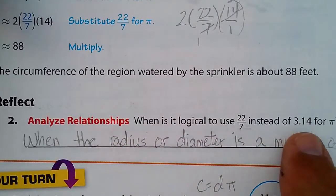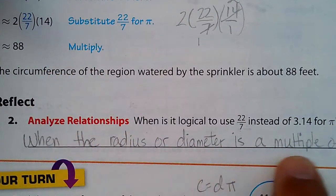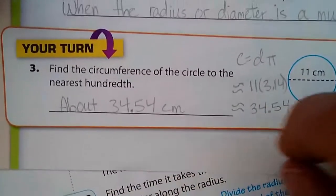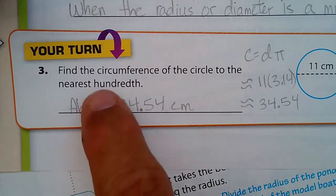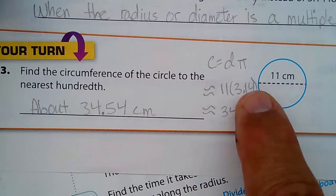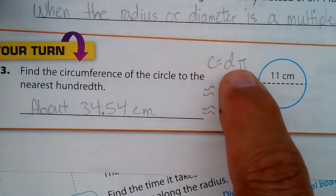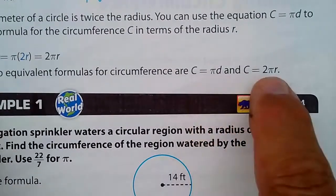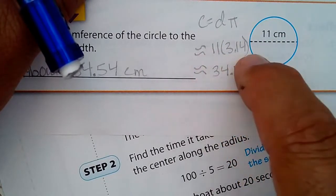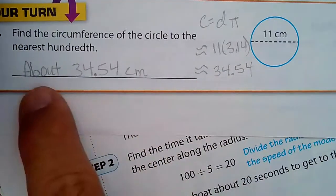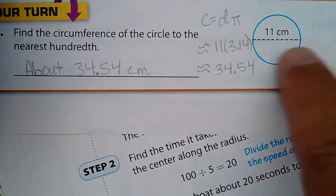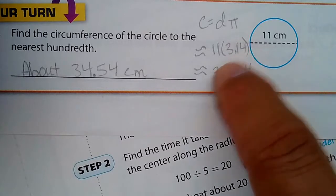When is it logical to use 22/7 instead of 3.14? When the radius or diameter is a multiple of 7, as in this problem where 14 is a multiple of 7. Next, find the circumference of a circle with diameter 11 centimeters, rounded to the nearest hundredth. We use C = πd, so it's 11 times 3.14, which equals 34.54 centimeters — approximately, since 3.14 is just the start of pi's infinite decimal: 3.14159265358979... and so on.